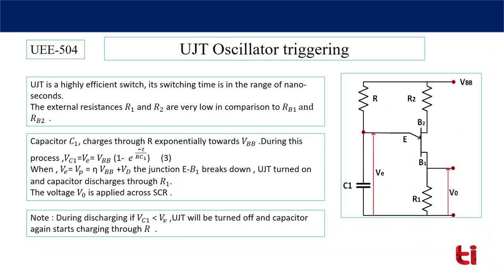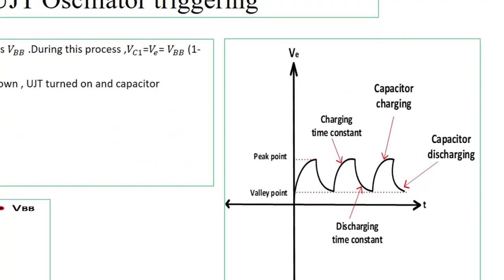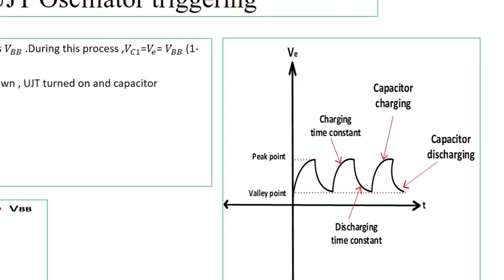Let's discuss these things in detail. Here in this graph, you can see that capacitor voltage, here it is emitter voltage, initially increases to the peak point, then after peak point it discharges. Capacitor C1 charges through R exponentially towards VBB.